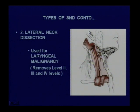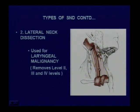The second variety is lateral neck dissection. In this, you take out the complete jugular chain — upper (level 2), middle (level 3), and lower (level 4) — sweeping the entire jugular chain while leaving level 1 and level 5 undisturbed. This is called lateral neck dissection, and it is generally used for laryngeal malignancies.